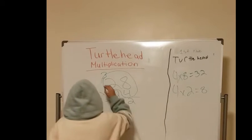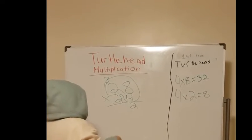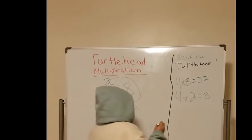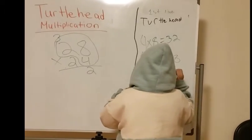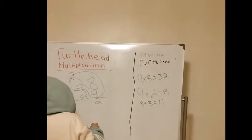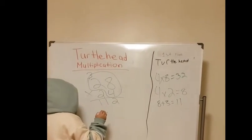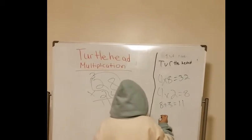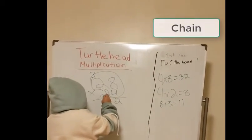But since there's a 3 up there, I would have to add 8 plus 3. 8 plus 3 equals 11. So now I would write 11 here. So now I would have to chain up my 4.